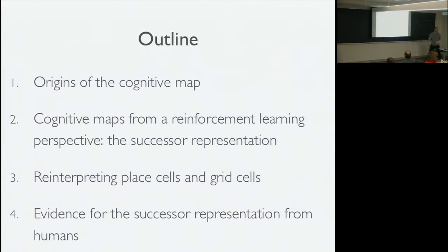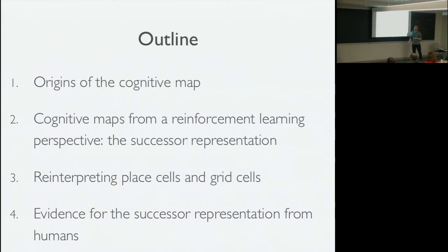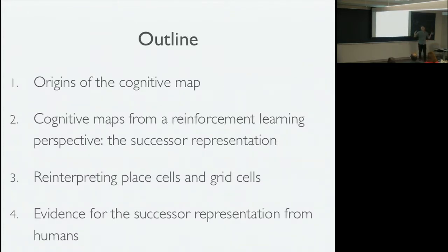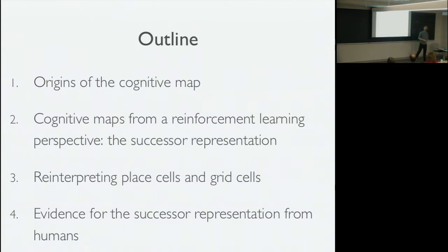I'm going to talk first about the origins of the cognitive map idea, then about the notion of a cognitive map from a reinforcement learning perspective. I'm going to introduce a particular formal instantiation of a predictive map known as the successor representation, and use that to reinterpret place cells and grid cells at a fairly high level of abstraction. If I have time, I might tell you about some experimental evidence we've collected.